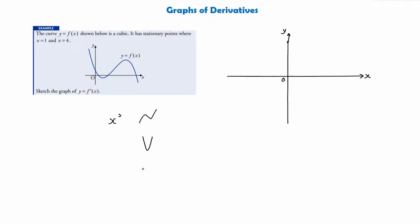Because the derivative of x cubed is 3x squared, and the bit we care about is the x squared part, we can see this is to the power of 2 — so it's going to be a quadratic.